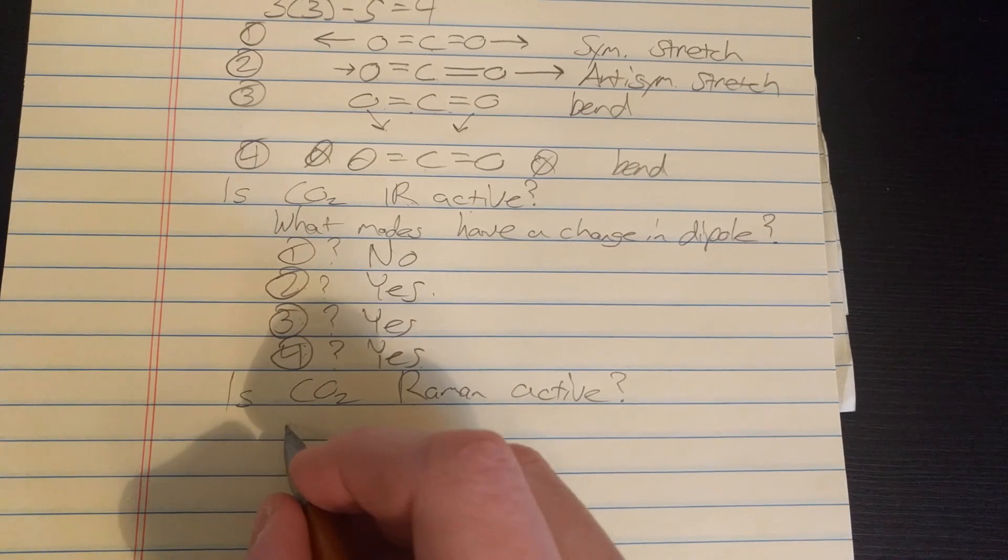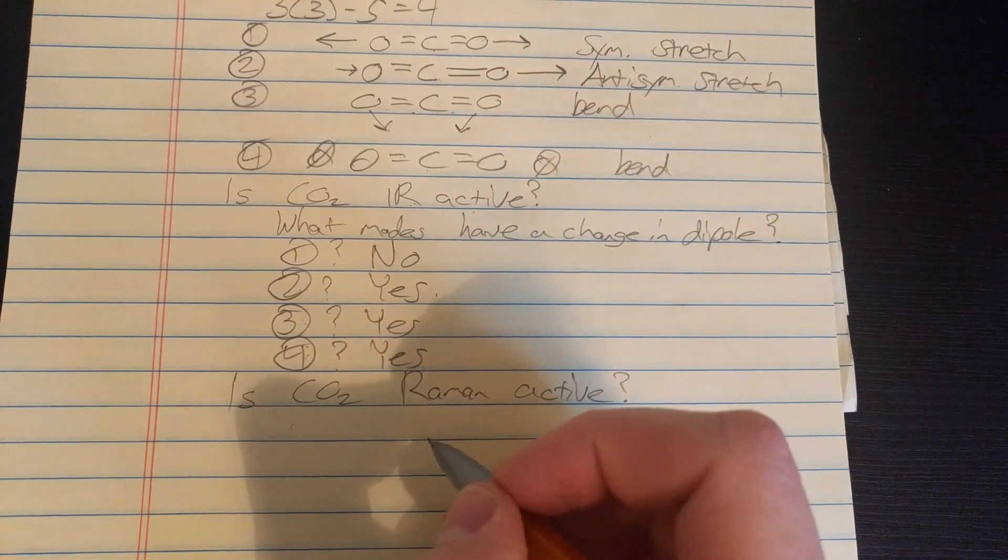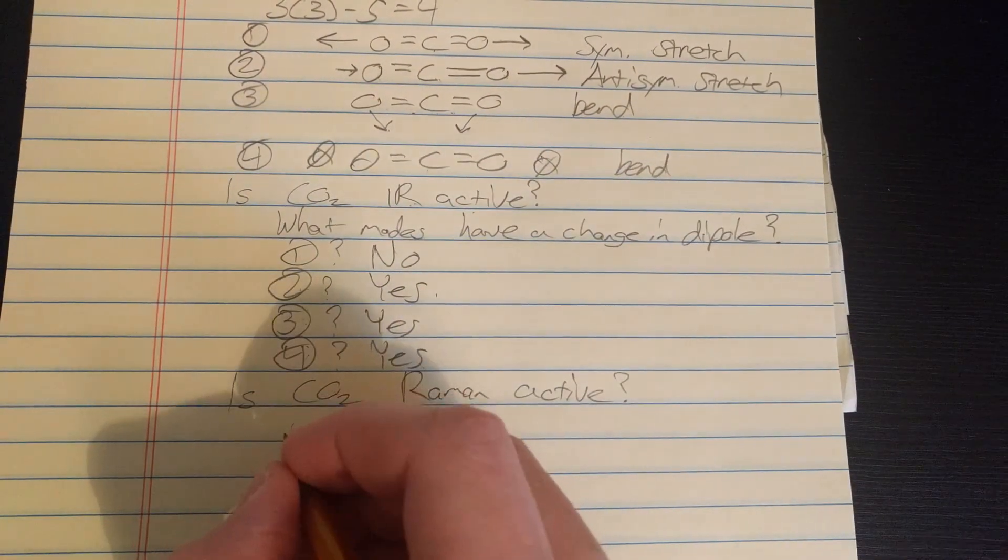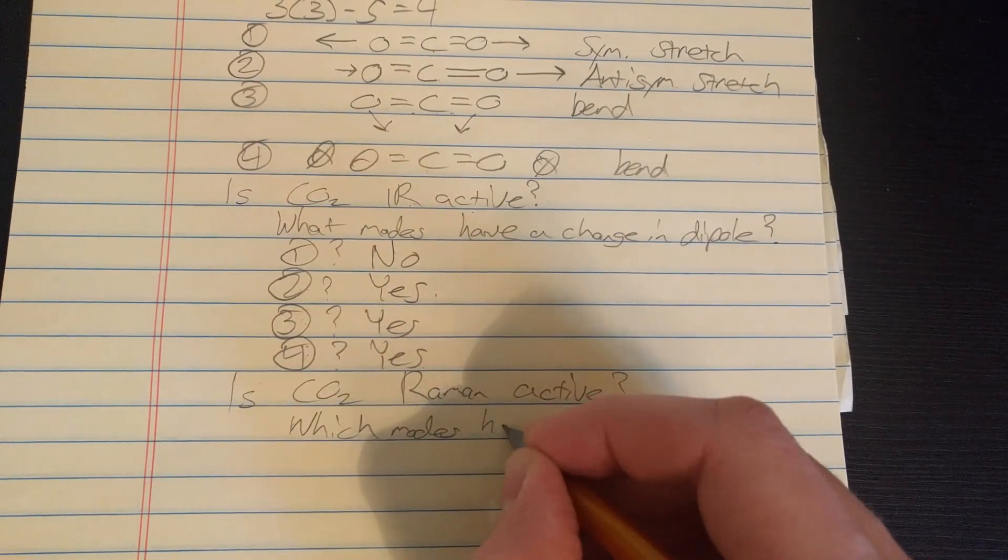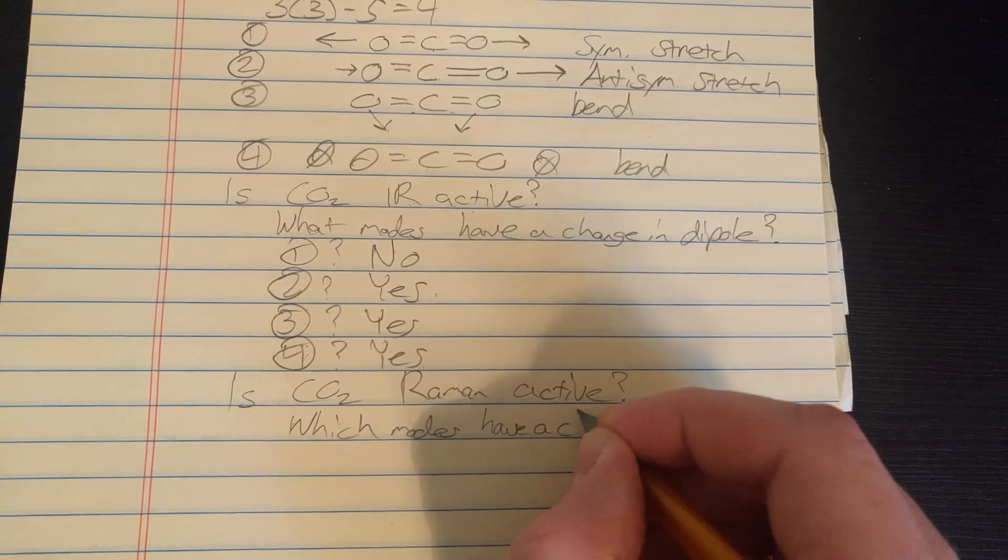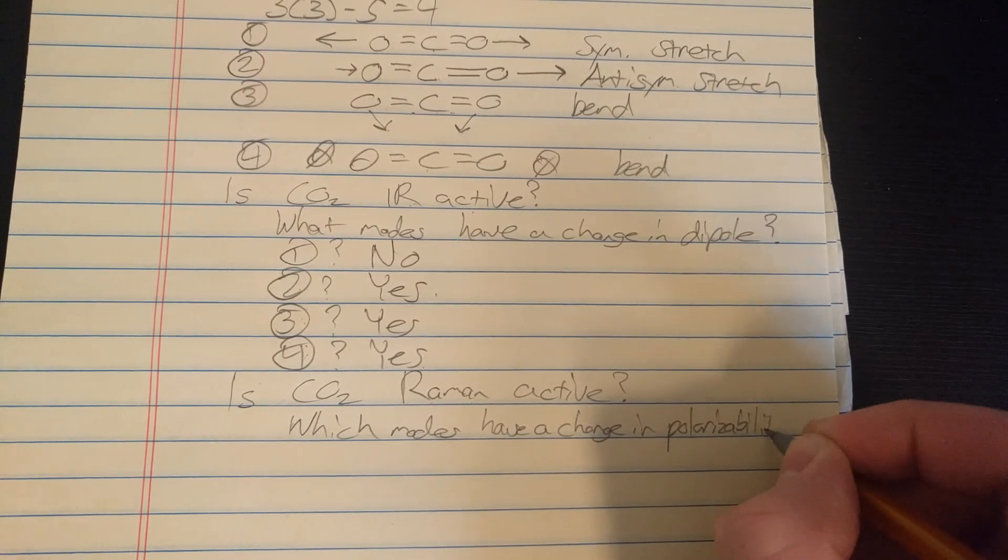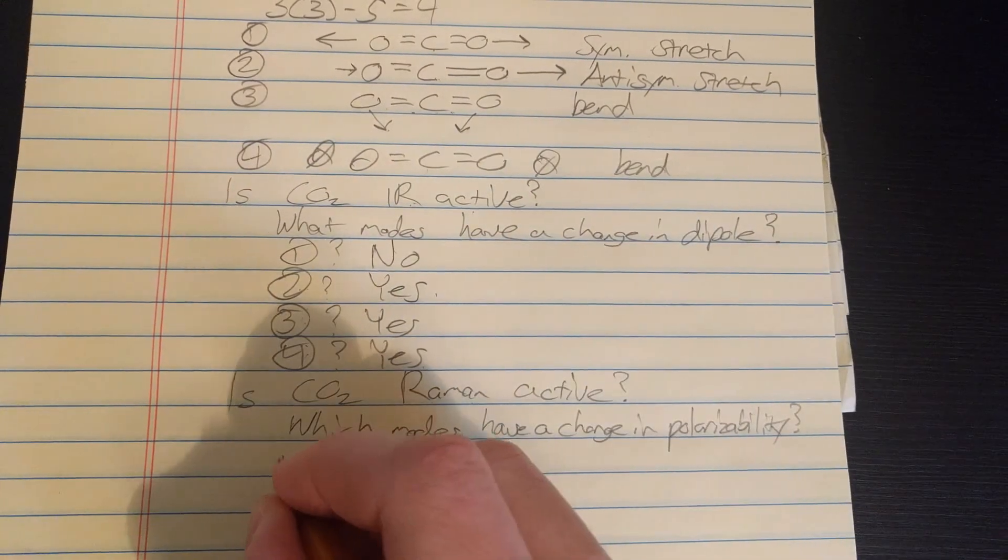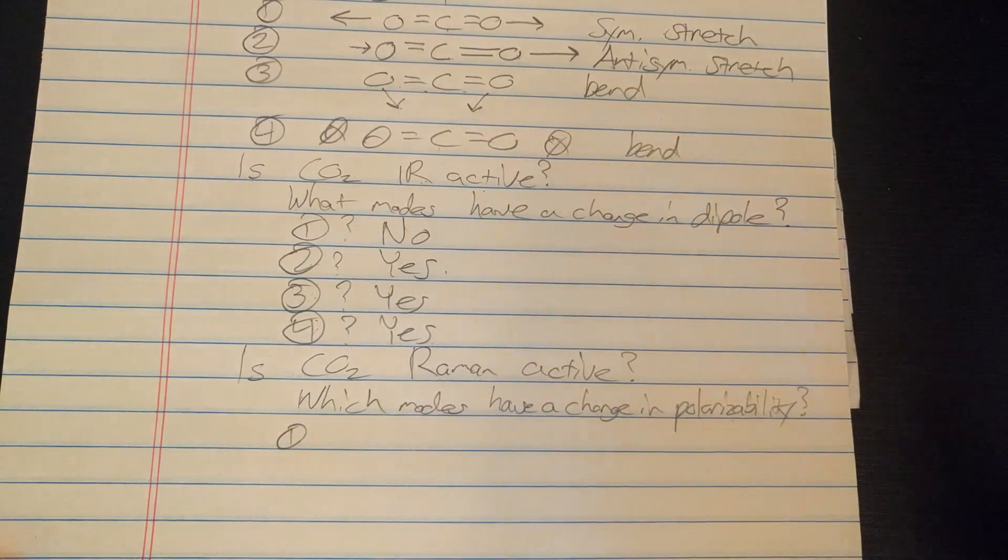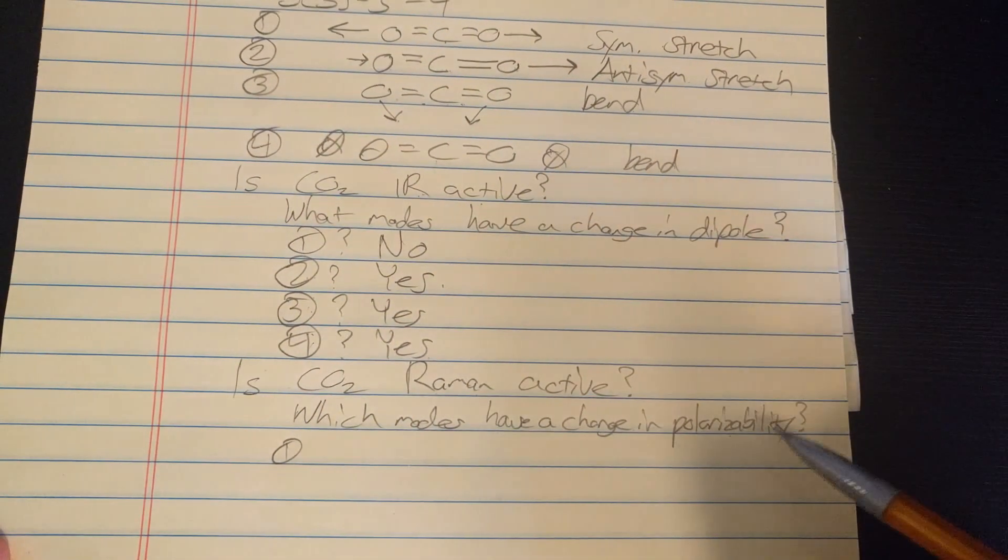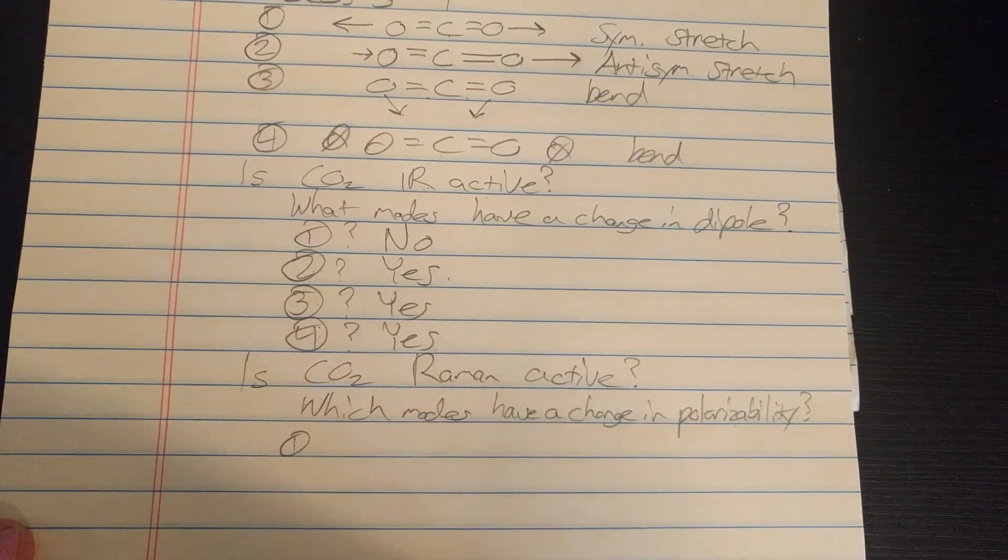So we're asking, the selection rule for Raman activity is, is there a change in polarizability, or which modes have a change in polarizability. And the general rule for polarizability is bigger molecules are more polarizable than smaller molecules. Well maybe I should have said atoms there. I always think of the halogens.